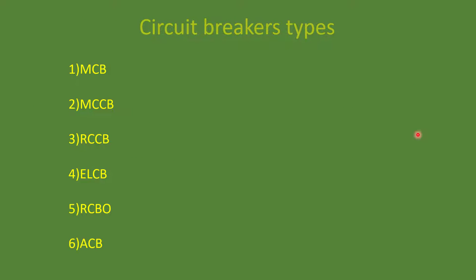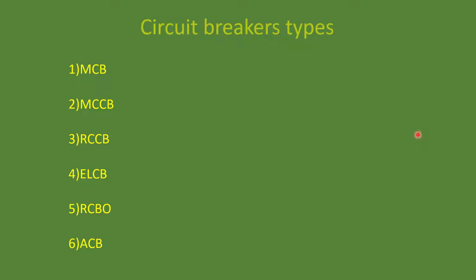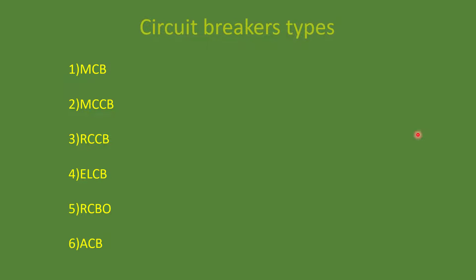Let's look at some commonly used circuit breakers in the market. The first one is MCB, the second is MCCB, the third is RCCB, then ELCB, RCBO, and ACB. We will examine them one by one.